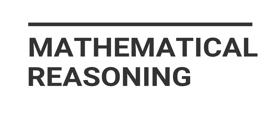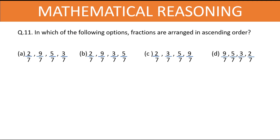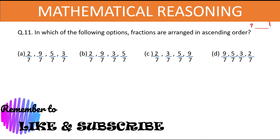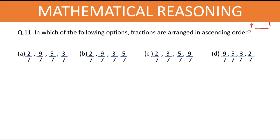Now let's head to the next section — mathematical reasoning. The first question: in which of the following options are fractions arranged in ascending order? Ascending means smaller to bigger. If the denominator is the same, we only need to look at the numerators from smaller to bigger. Out of the options, it is option C which has the numerators placed in smaller to bigger order. Hence option C is the right answer.